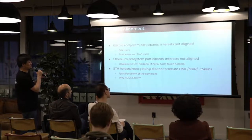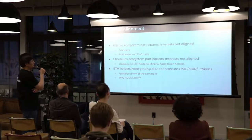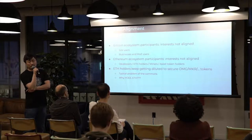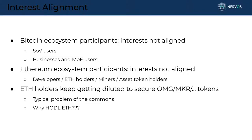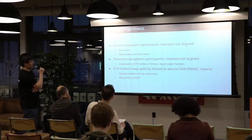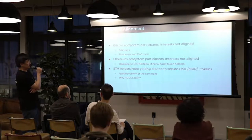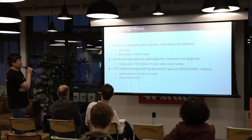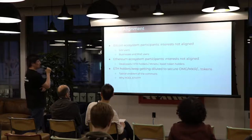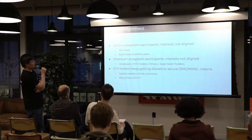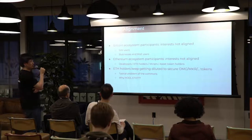Interest alignment is one of our goals. If we want a network to grow, we want all participants to have their interests aligned so they can together push the network forward. In the Bitcoin ecosystem, participants are not aligned — we've seen fights over small blocks vs. big blocks. In Ethereum, participants including developers, token holders, miners, and asset token holders are also not aligned. For example, developers want lower transaction costs while ETH token holders want the ETH token to appreciate.